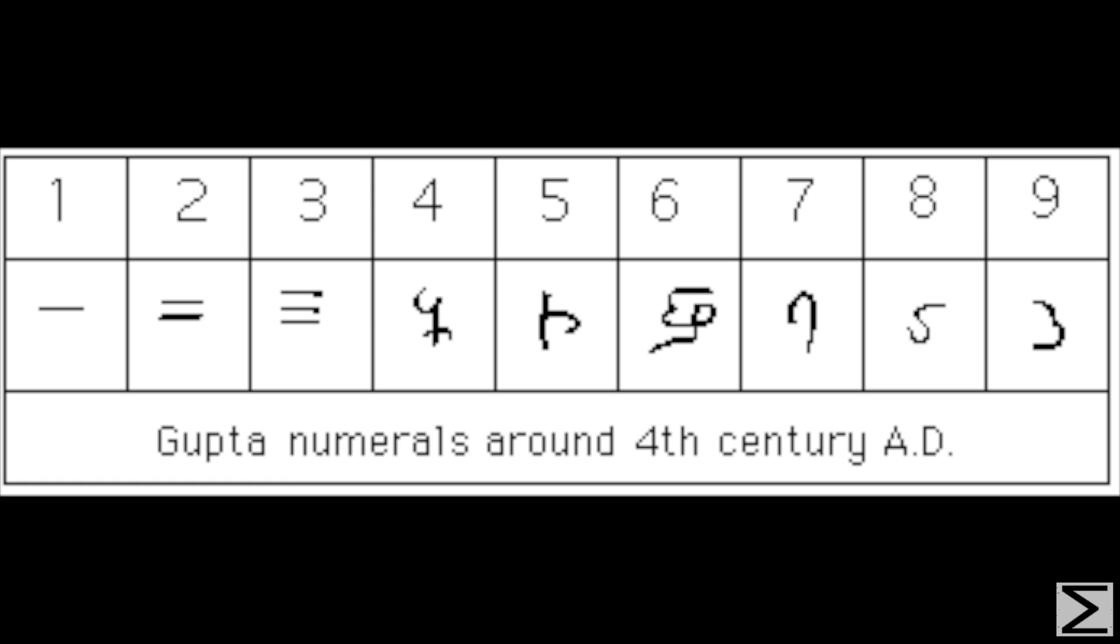Its only use was to distinguish numbers. Without the creation of a placeholder, there was no way to distinguish, for example, 33 from 303 or 330. This necessitated the creation of a placeholder, which was zero. But that's all it was at first, just a placeholder.